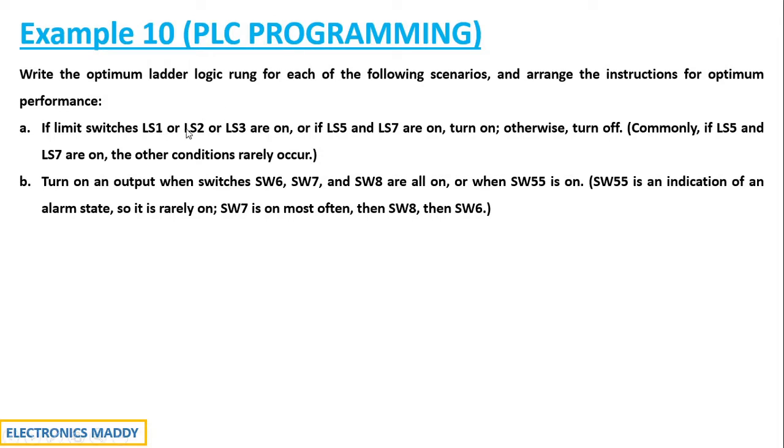That means LS1 or LS2 or LS3 - this is OR operation. If you have not gone through the OR operation video, please do watch it. This is AND operation - LS5 and LS7. They have also specified one more condition. Commonly, if LS5 and LS7 are on, the other conditions rarely occur. This is very helpful for us to get the optimum condition done.